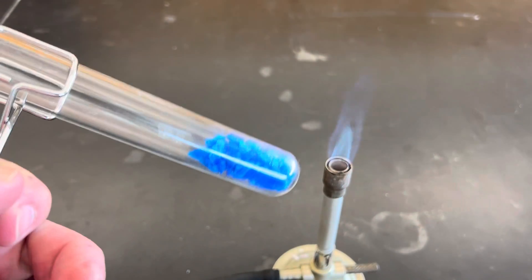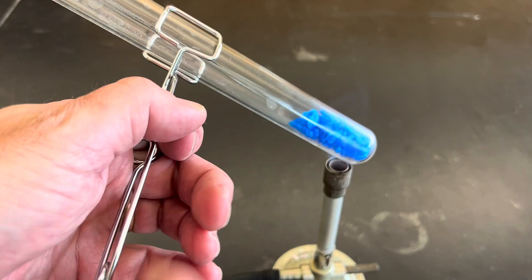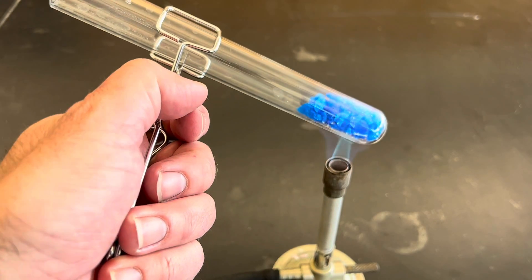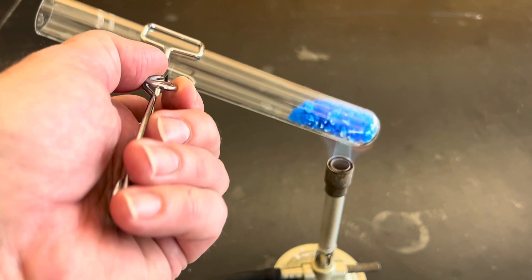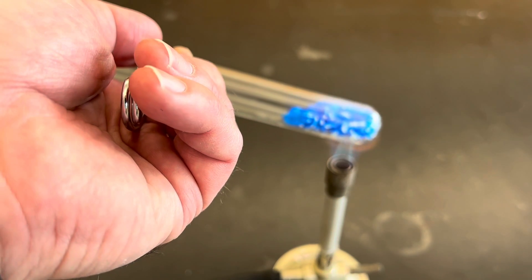I want to light my Bunsen burner and put this in the Bunsen burner and show you what happens. The copper(II) sulfate crystals are going to go into my Bunsen burner flame, and as I'm heating it something interesting is happening. First of all, you might be able to see that there's a color change happening. Some of those crystals are turning from blue to white.